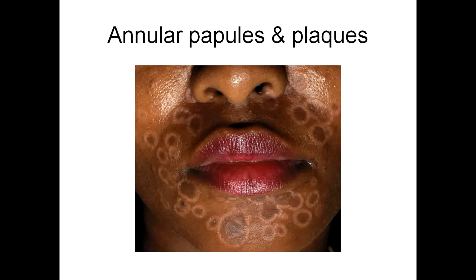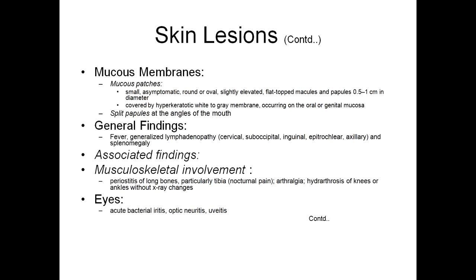These are very nice pictures showing annular papules and plaques around the perioral area. Mucous membranes may also show lesions like mucous patches — small, if symptomatic, round or oval, slightly elevated, flat-topped macules and papules covered by a hyperkeratotic white-to-gray membrane — occurring on the oral or genital mucosa. Split papules may be seen at the angles of the mouth.